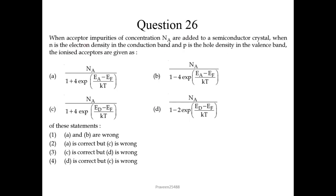Question number 26: when acceptor impurities of concentration Na are added to a semiconductor crystal, where N is the electron density in the conduction band and P is the hole density in the valence band, the ionized acceptors are given as Na upon [1 + 4·exp((Ea − Ef)/kT)], where 4 is a degeneracy factor, Ea is the acceptor energy level, and Ef is the Fermi energy level. So option A is correct, and we will choose option 2 for question 26.